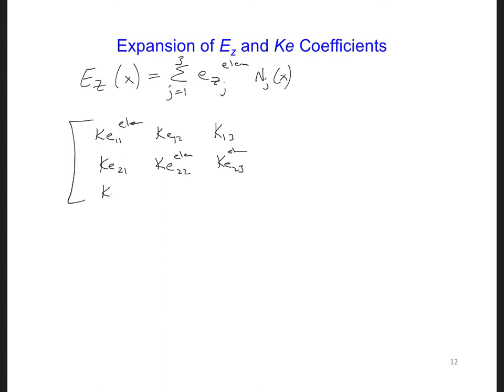Then the expansion of ez is now a summation from 1 to 3 instead of 2. ezj for the element times njx. And the matrix equation also has the same form, except now it's expanded to have three nodes. ke11, ke12, 13. And all of these have element written in the subscript. And so forth for all these.